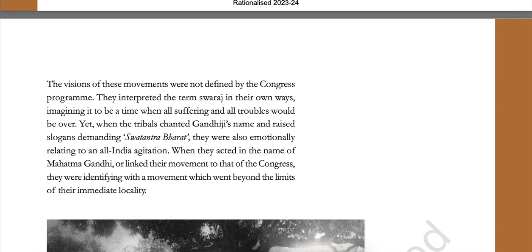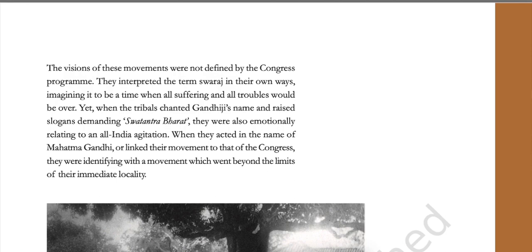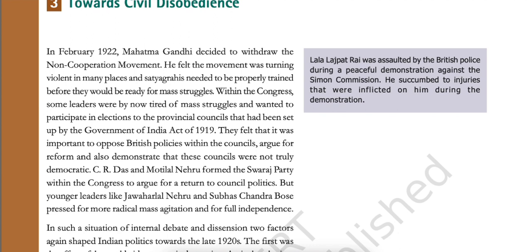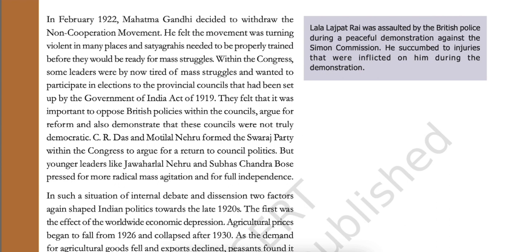Yet, when the tribals chanted Gandhiji's name and raised slogans demanding Swatantra Bharat, they were also emotionally relating to an all-India agitation. When they acted in the name of Mahatma Gandhi or linked their movement to that of the Congress, they were identifying with a movement that went beyond the limits of their immediate locality. In February 1922, Mahatma Gandhi decided to withdraw the non-cooperation movement. He felt the movement was turning violent in many places and Satyagrahis needed to be properly trained before they would be ready for mass struggles.